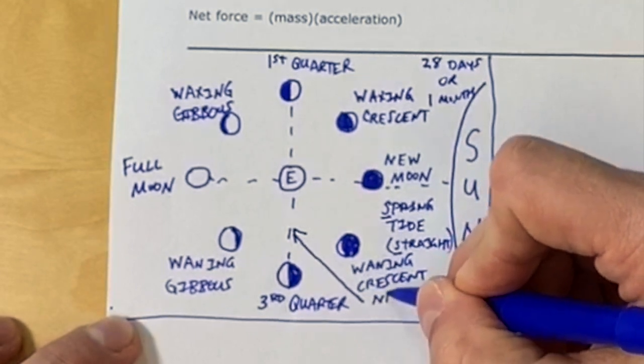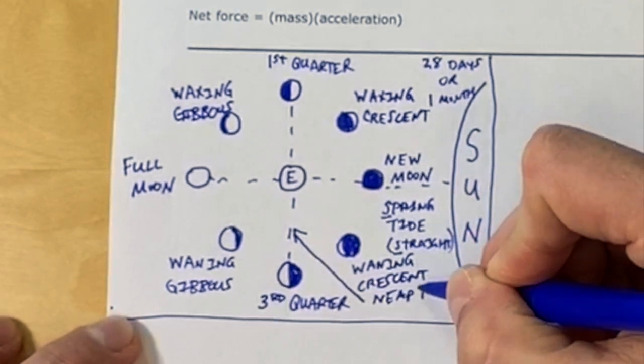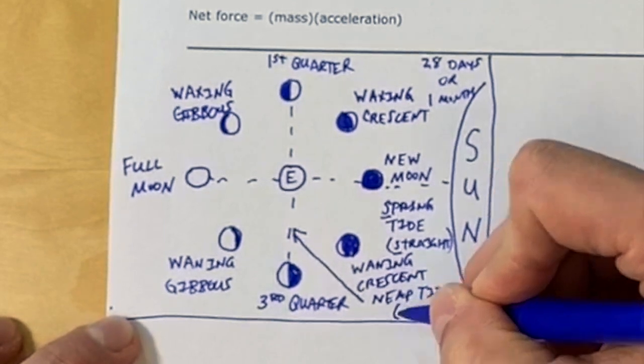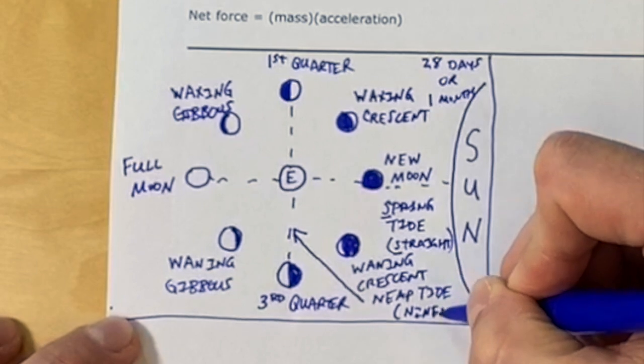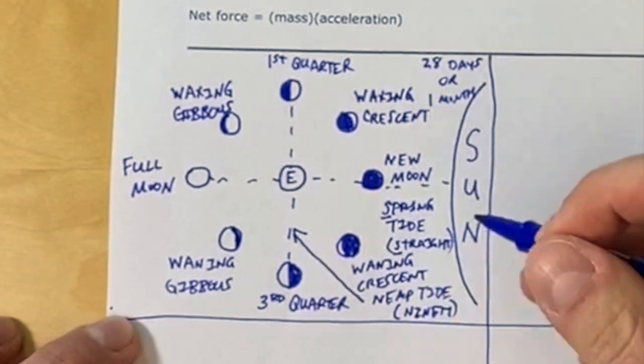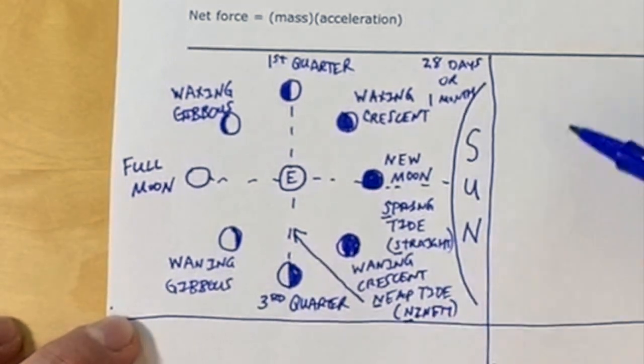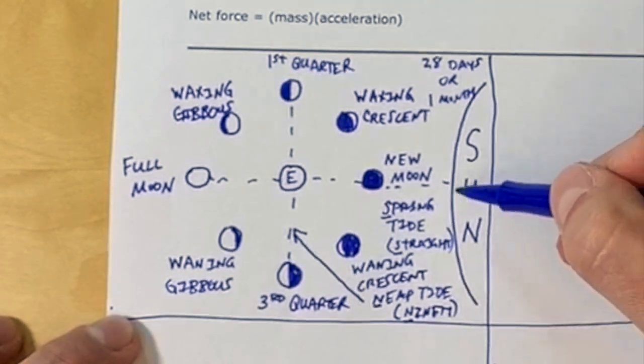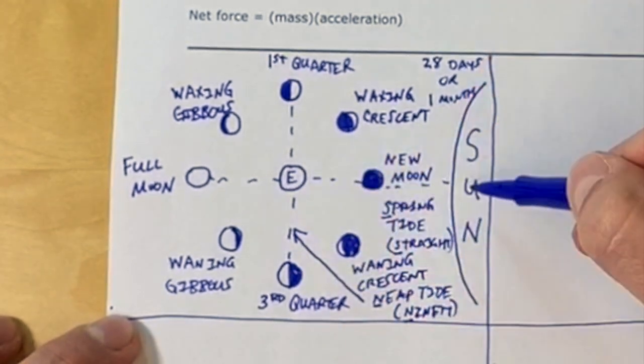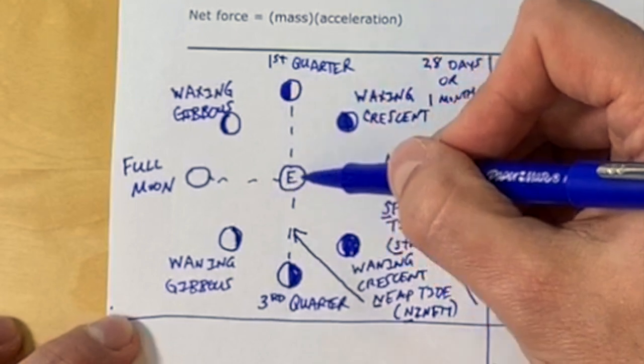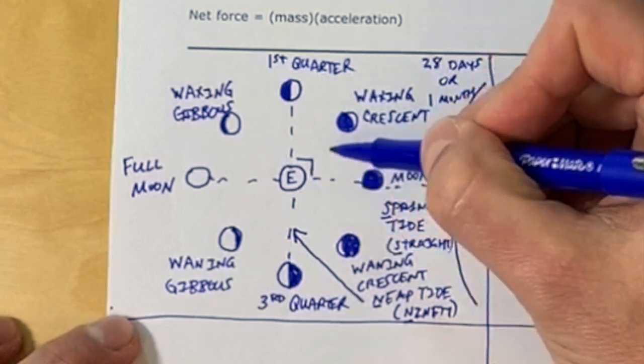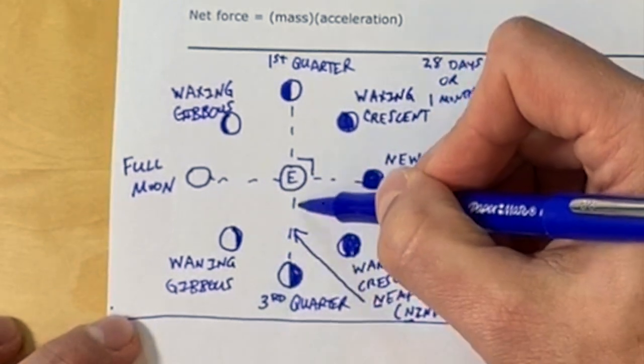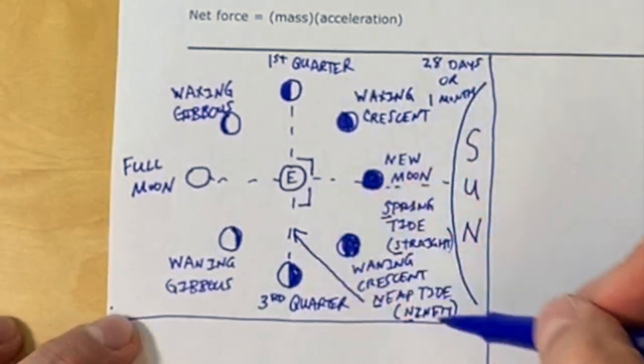When we draw the line with the sun, earth, and moon perpendicular to each other, this is called a neap tide. An easy way to remember this is the N in neap is also the same as N in the 90 degree angle. You can see the angle here. The sun, earth, and moon creates a 90 degree angle. That's the 90 degrees. So that's called a neap tide.